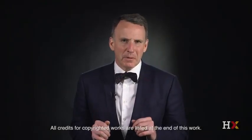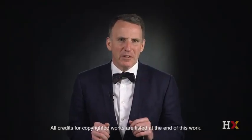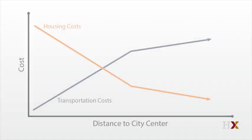Let's return to our simple Alonso-Muth-Mills model of prices within a metropolitan region. Transport costs go up with distance from the city center, and housing costs go down to offset the added cost of commuting.